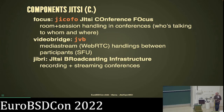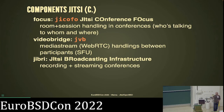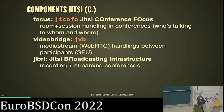JCOFO controls JVB to say which video stream goes to which participant, or which screen sharing goes where, and which participants are connected for a particular conference. There's also a component I'm not fully presenting: the Jitsi Broadcasting Infrastructure, used for recording streams or streaming directly to YouTube. The Jitsi people have said 'YouTube only for now' for about two or three years — it's really hardcoded YouTube and you cannot just say 'I have a WebRTC stream, send it elsewhere.'